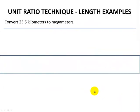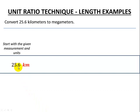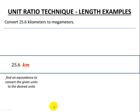Next example: let's convert 25.6 kilometers to megameters. We were in the imperial system before and now we're in the metric system, but the same process applies. Start with the given measurement and units — 25.6 km. We'll look for an equivalence from our tables to change the given units to the desired units, using our metric prefix table. We can see that one megameter is a thousand kilometers.